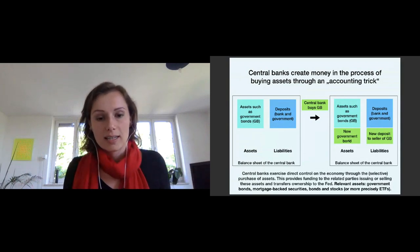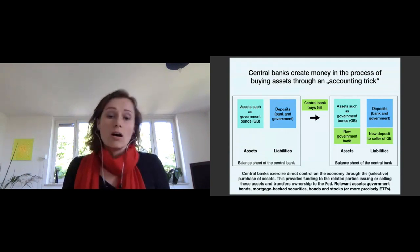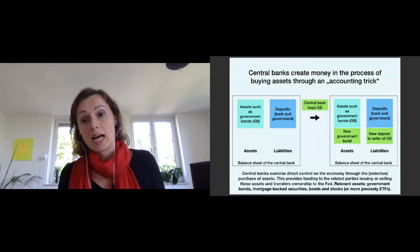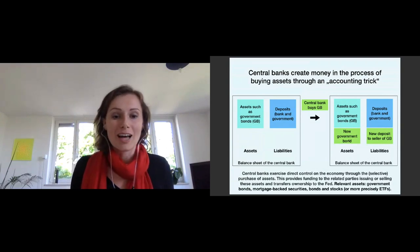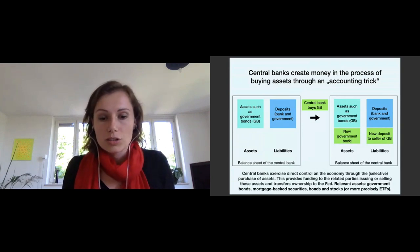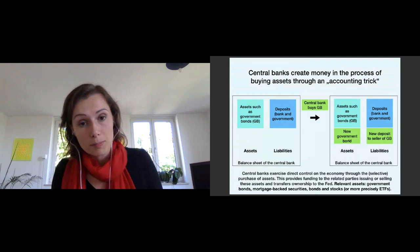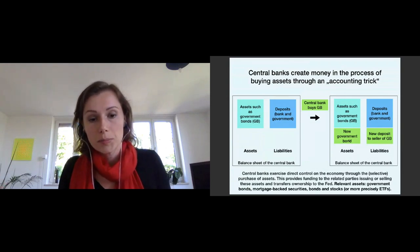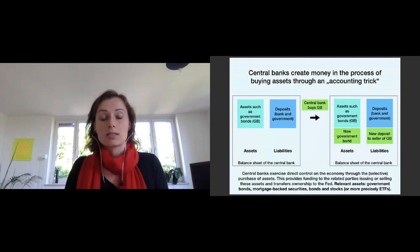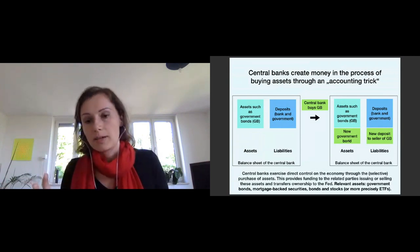This means the Fed can essentially infinitely buy assets on the market. They can also exercise direct control on the economy through the selective purchase of assets — deciding which assets are bought more and which are not, effectively deciding who gets the funding. Ownership is also transferred to the Fed in the end. Relevant assets are primarily government bonds, but also mortgage-backed securities, bonds from companies, stocks, and most recently ETFs — which are bundles of stocks.